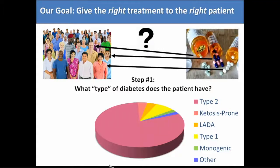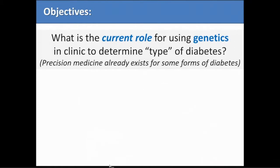If you're not an endocrinologist, you'd think there's just type 1 and type 2 diabetes. If you are an endocrinologist, you know it's more complicated — we recognize additional types: ketosis-prone, latent autoimmune diabetes of adulthood (LADA), type 1 diabetes, monogenic, and other forms. I'm going to speak about how genetics can be useful in clinic to determine type of diabetes.